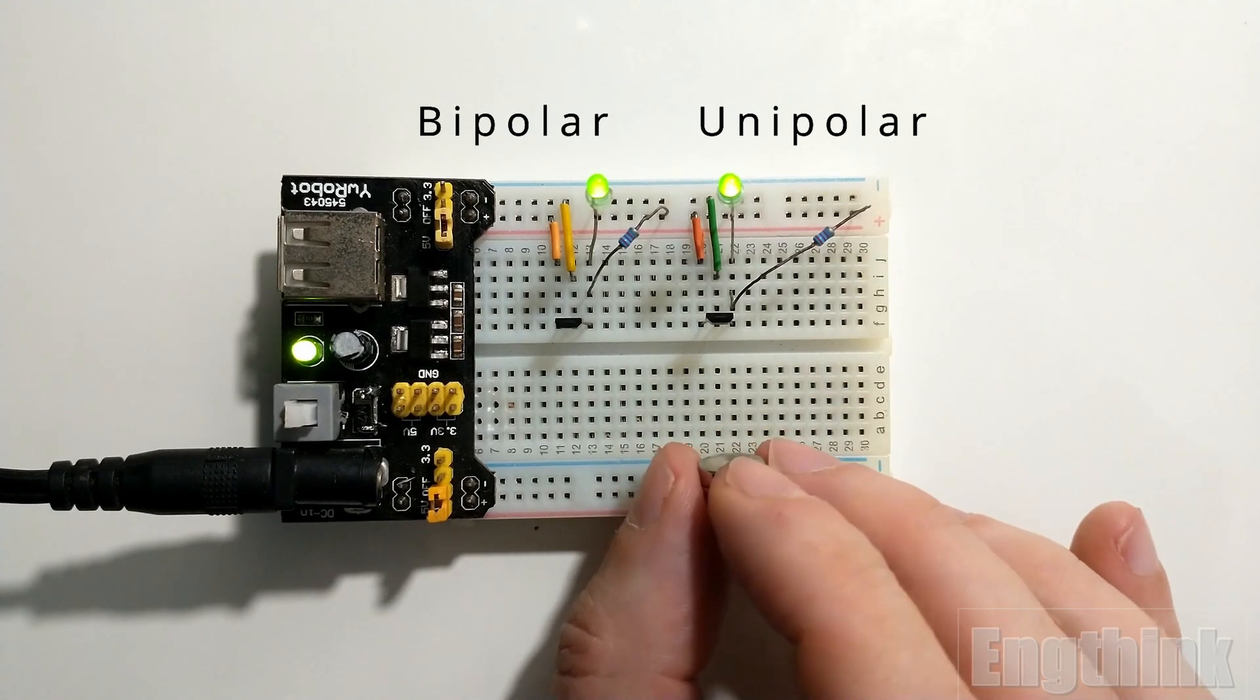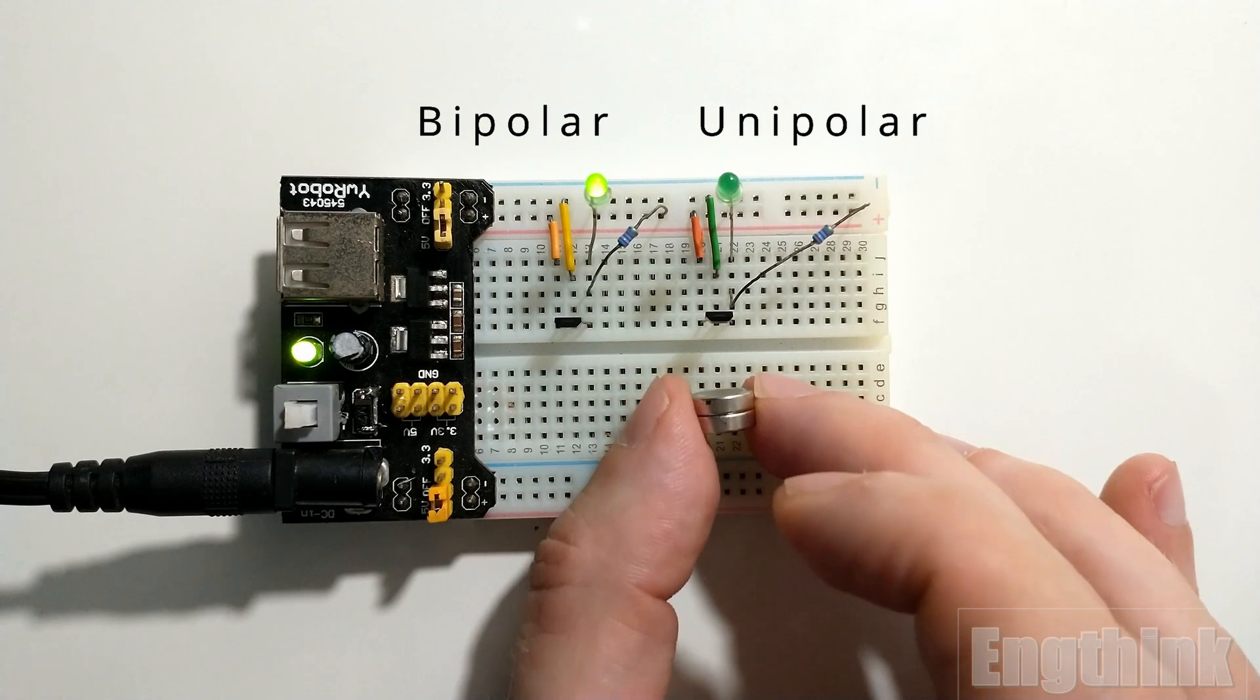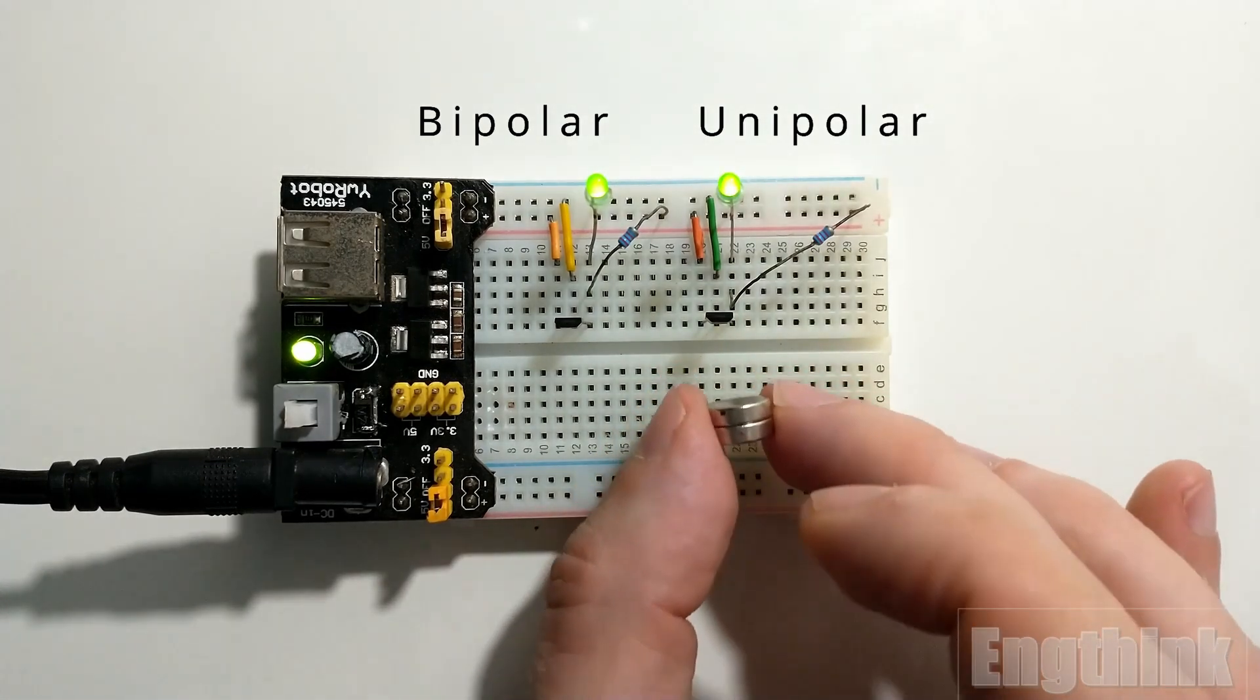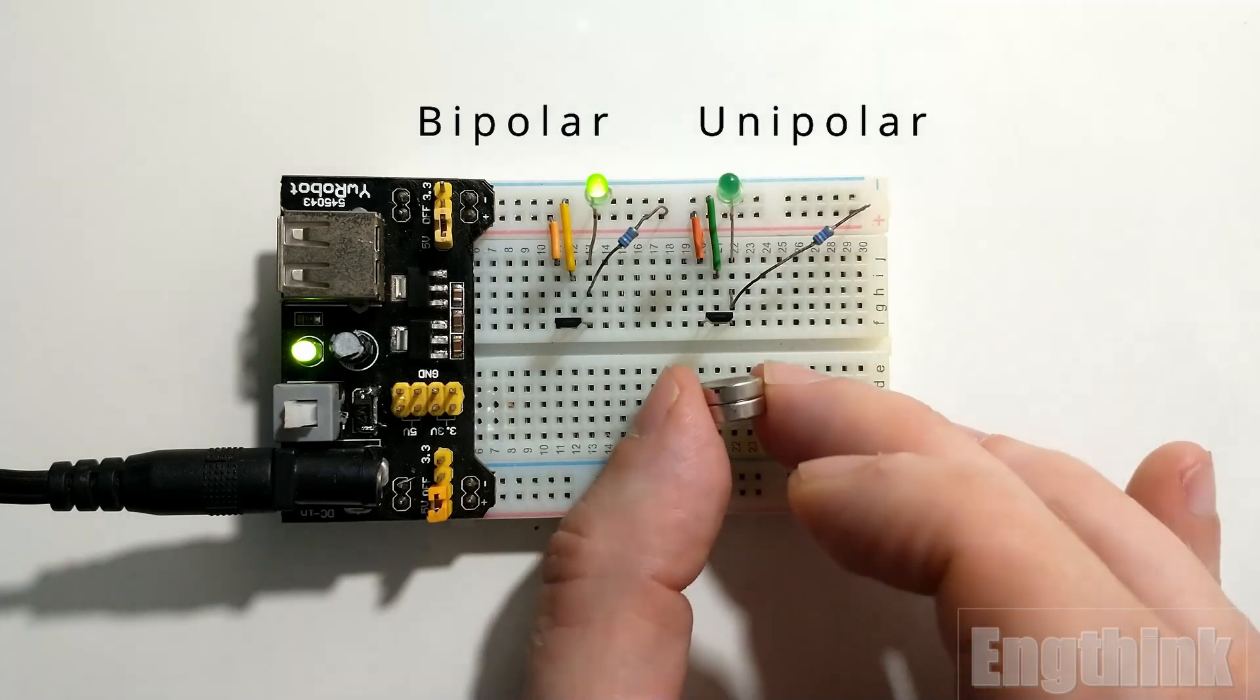However, if I remove the magnet in front of the sensor, we can see that the LED turns on. So for the Hall effect sensor unipolar model, when I have the south magnetic field, I have a transition of the sensor output.